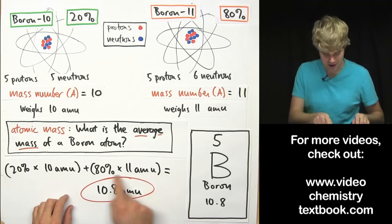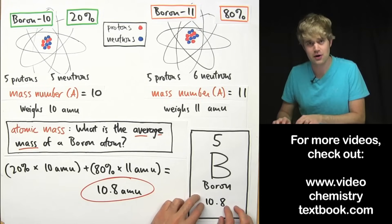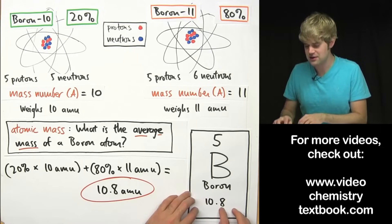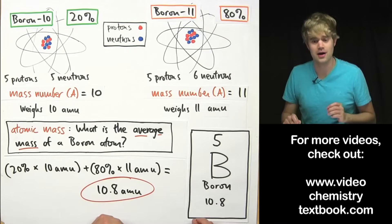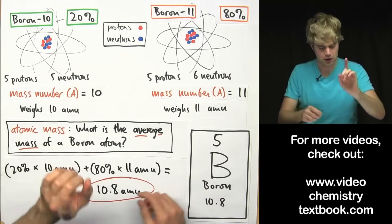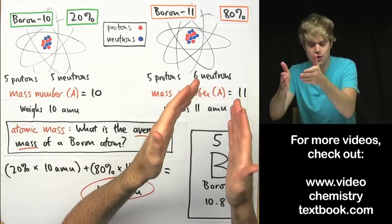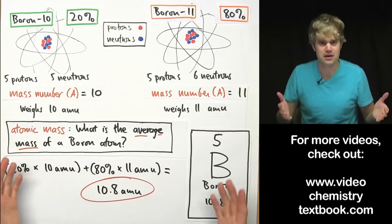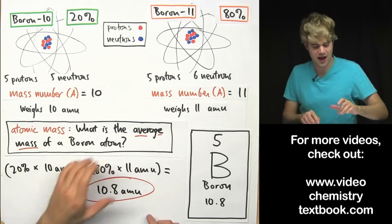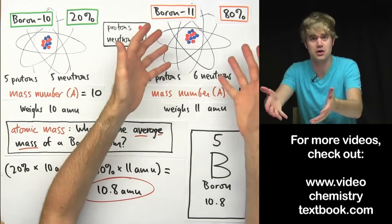The number we get — 10.8 AMU — is what appears at the bottom of boron's entry on the periodic table. That's what the atomic mass number represents: the average weight of one boron atom. Our two isotopes weigh ten AMU or eleven AMU, but the average is 10.8, which is much closer to eleven than to ten. That makes sense because we have so many more boron-11 atoms, and since they weigh more, the average should be pulled closer to eleven.